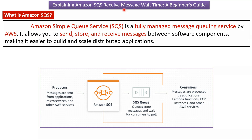In this video tutorial I will explain what is receive message wait time in Amazon SQS. Amazon SQS is a fully managed message queuing service provided by AWS. It allows you to send, store, and receive messages between software components, making it easier to build and scale distributed applications.